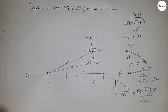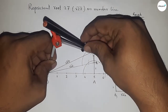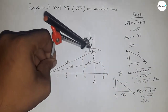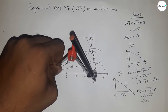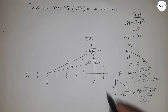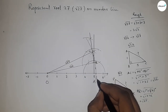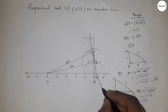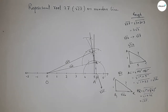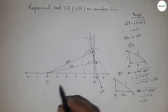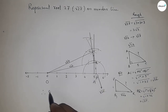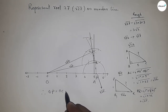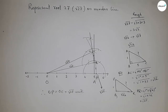Now take the length OC with the compass and draw an arc that cuts the number line at point P. This point P is the representation of root 27 on the number line. Therefore, the distance OP is equal to root 27 units.